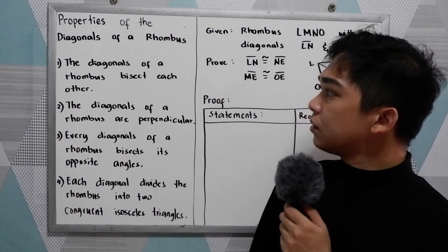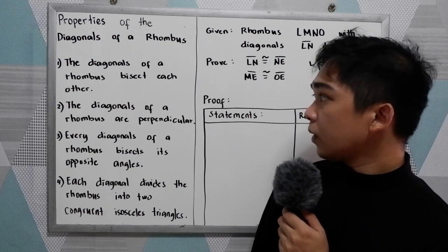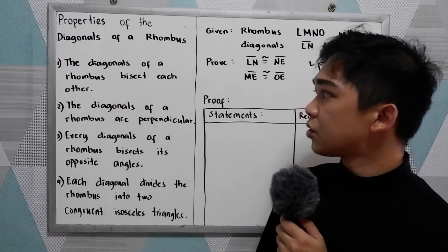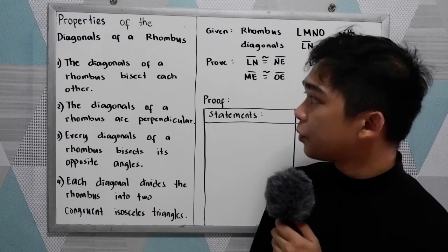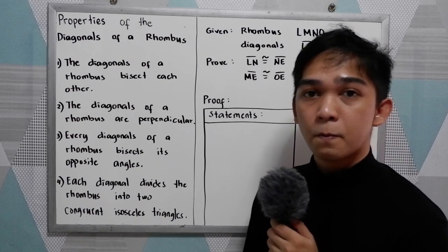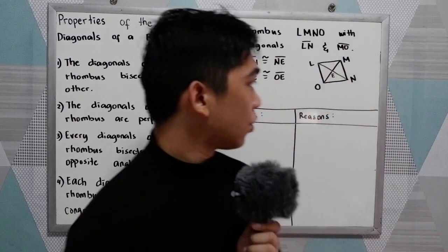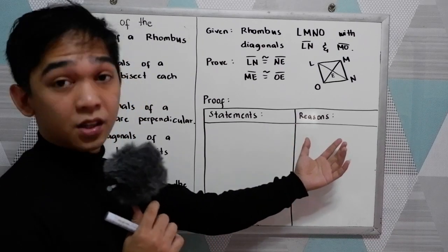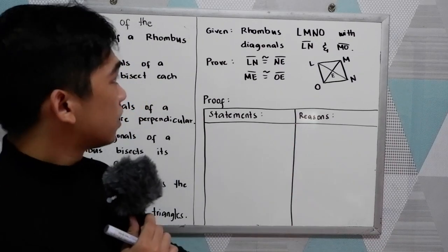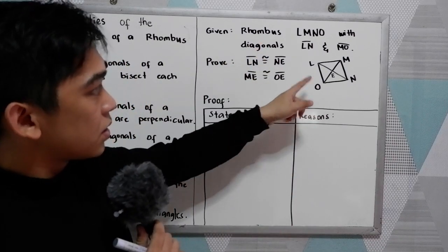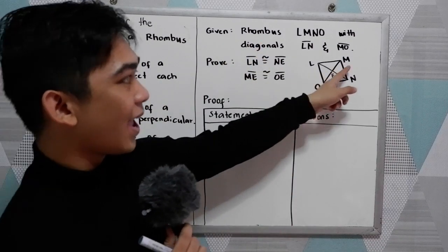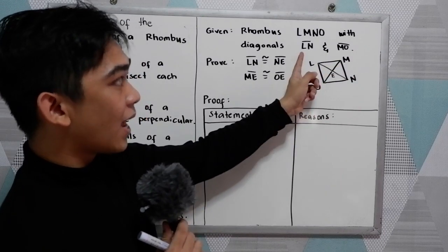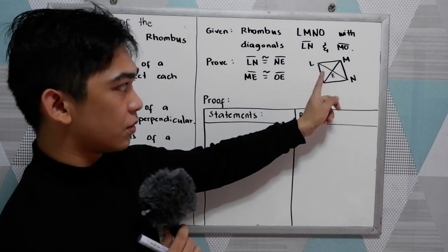Now let us prove property number one: the diagonals of a rhombus bisect each other. To prove this, we have our statements and reasons. Given: rhombus L, M, N, O with diagonals LN and MO.